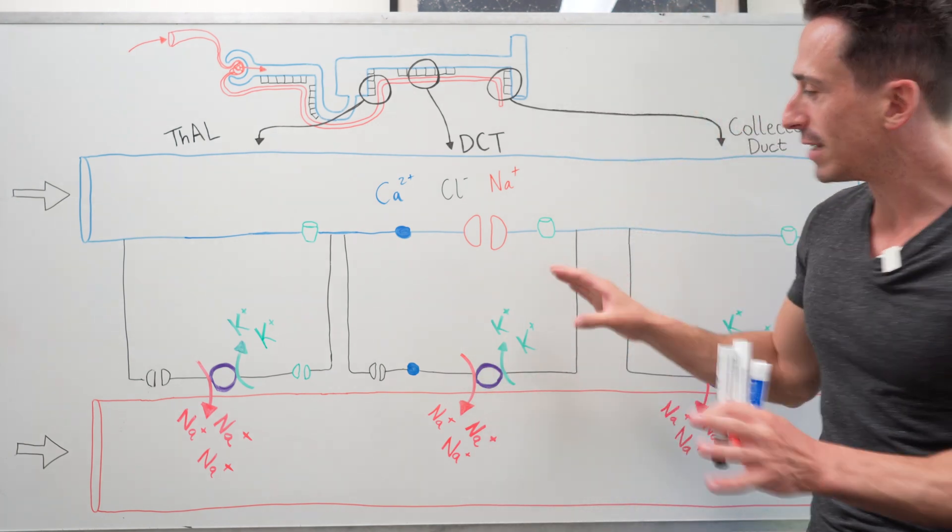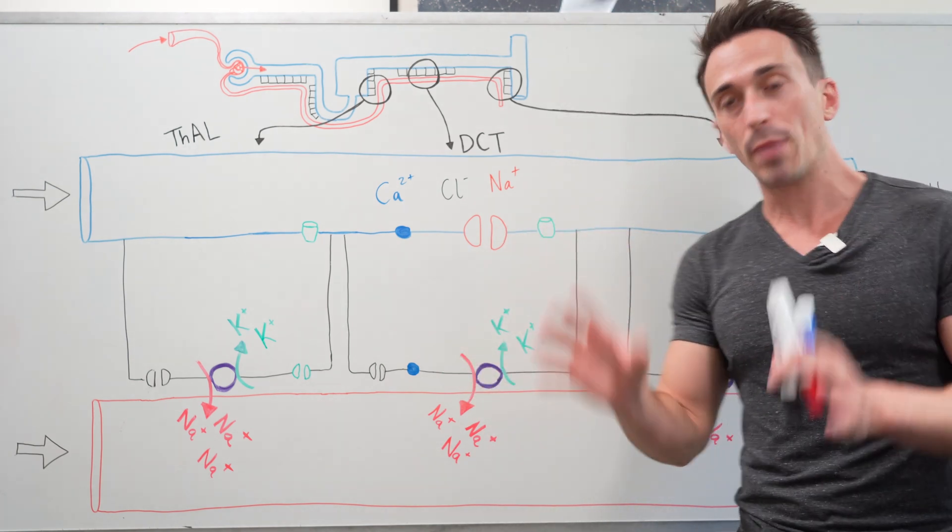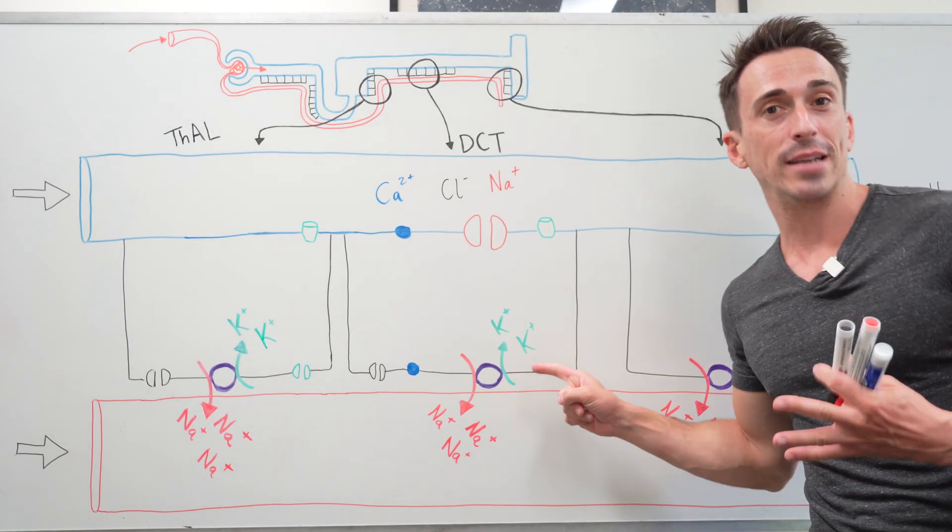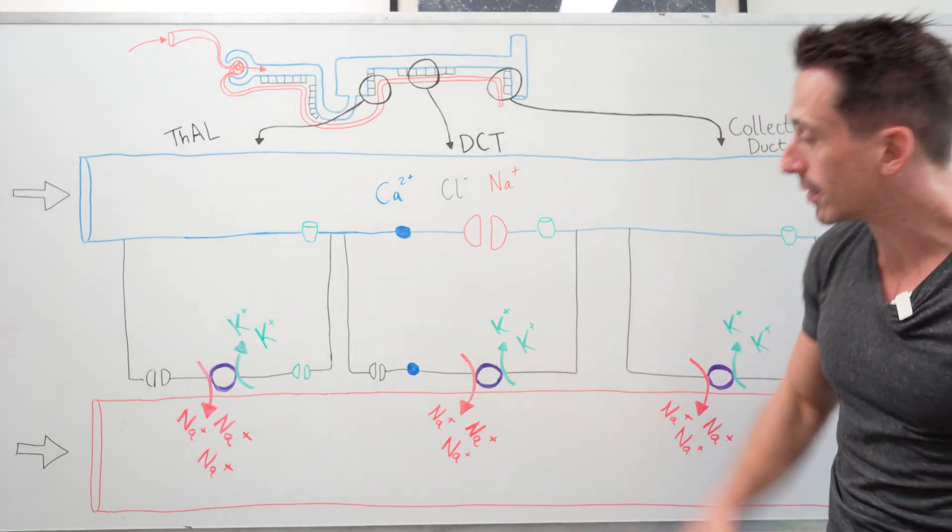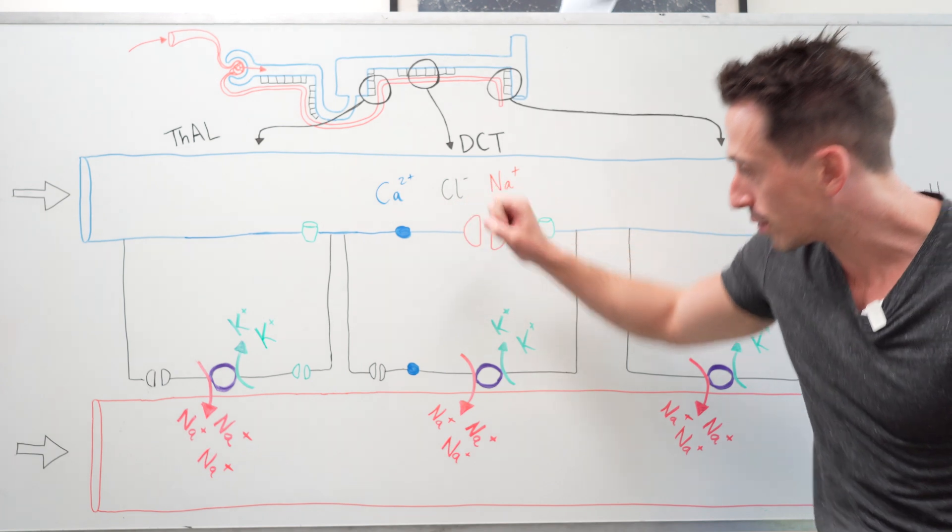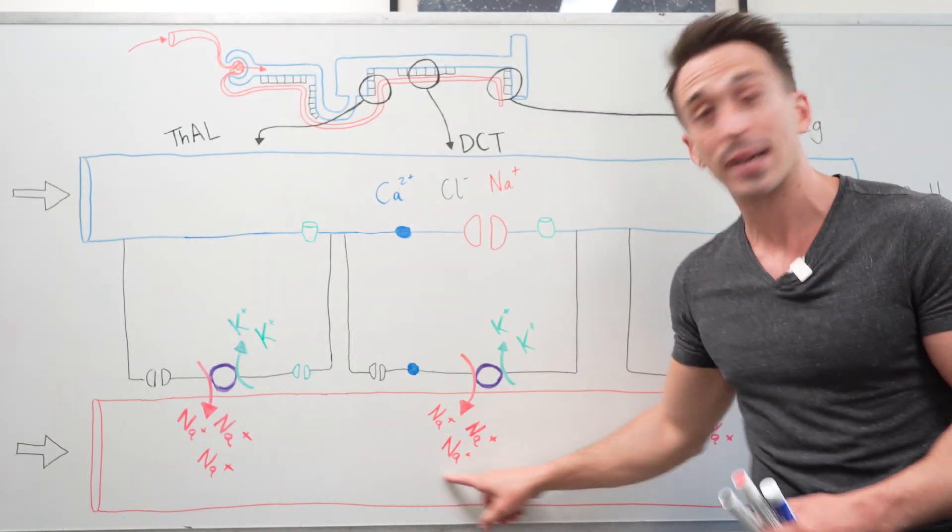Well first you must remember that these cells at the basolateral membrane have the sodium potassium ATPase pump. What does it do? It takes sodium from inside the cell and throws it out of the cell, ultimately going back into the blood.